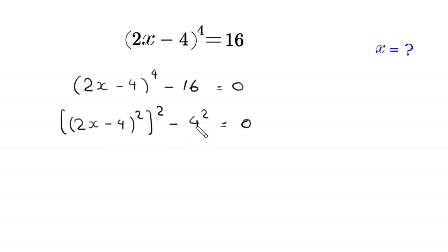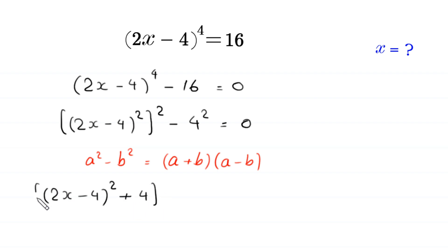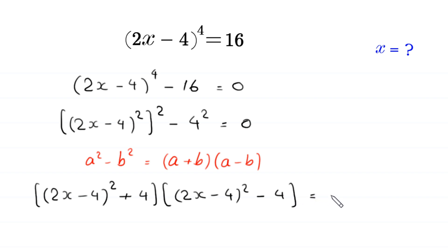Now, we have a difference of two squares. So, by using the algebraic identity a squared minus b squared is equal to (a plus b) times (a minus b), this will become (2x minus 4) squared plus 4, times (2x minus 4) squared minus 4, is equal to 0.